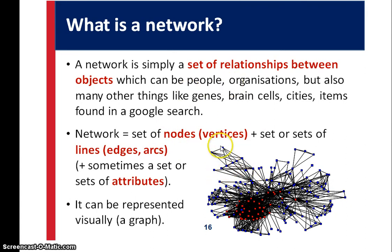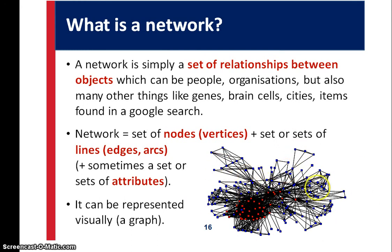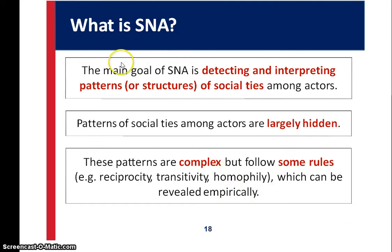It can be almost anything — nodes don't have to be people. They could be genes, brain cells, cities, how cities communicate. We represent these things in a graph, and you can really visualize where communications are happening more clearly than just saying 'these guys are a group.' We now have more defined analysis of what's going on within the network. The main goal of SNA is detecting and interpreting patterns or structures of social ties.